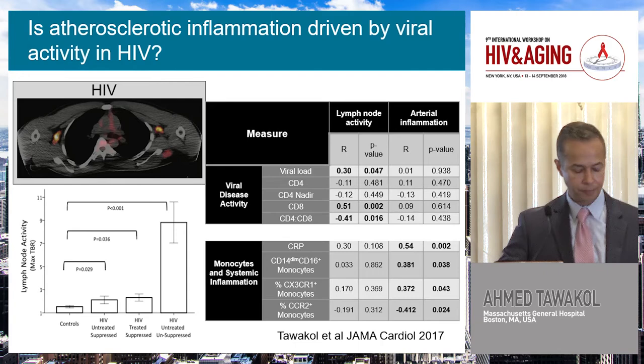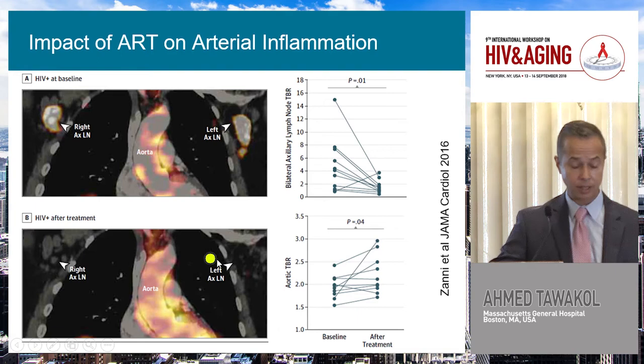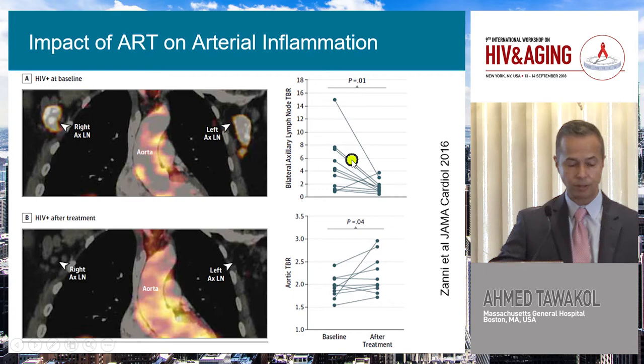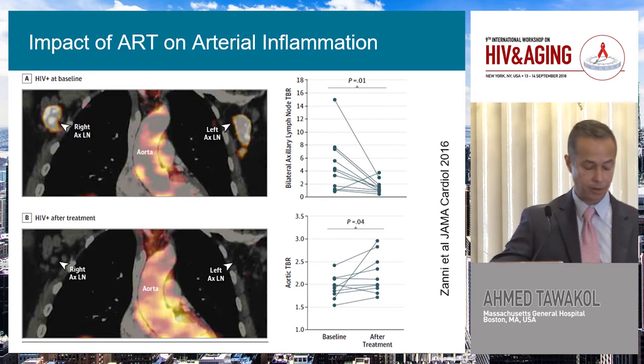These differences suggest that treating viral load itself might not pay off in terms of changing the arterial inflammatory milieu. And we tried that. In a study of individuals newly treated with ART, lymph node activity clearly diminished in almost all patients before versus after treatment. Whereas arterial inflammation didn't go down — there was actually a slight hint of it going up. So that doesn't seem very promising.